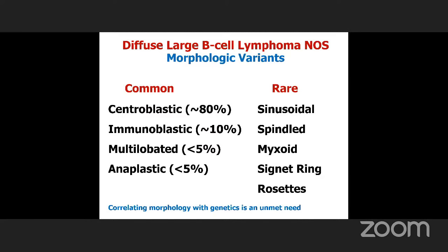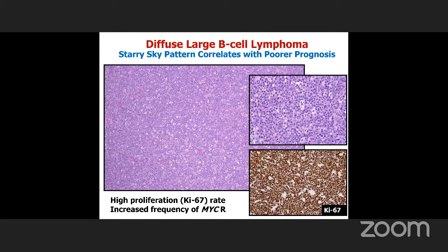One more thing about morphology: the starry sky pattern is a bad thing. In my experience, if a patient has a starry sky pattern, they're not going to do great. It's worth noting this in the pathology report when present. We know this pattern is associated with a very high proliferation rate by Ki-67 and a higher frequency of MYC rearrangement.